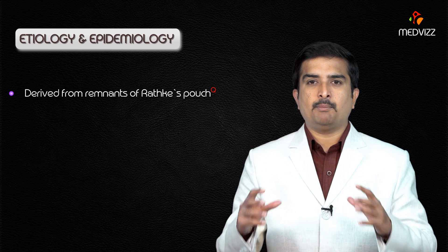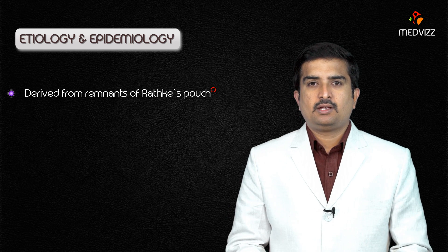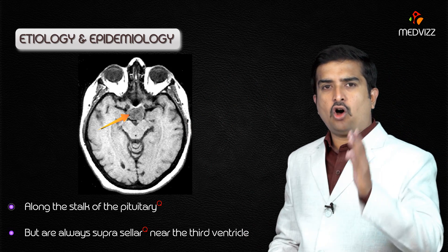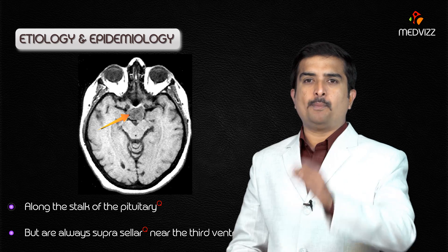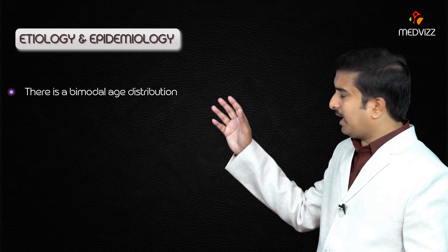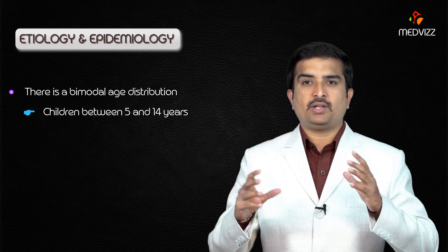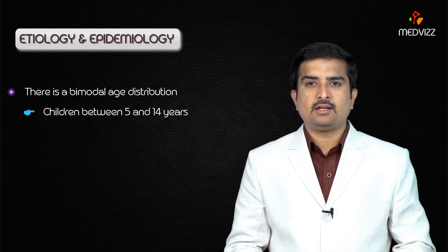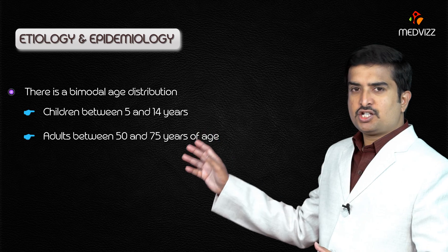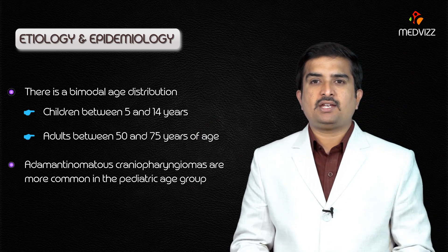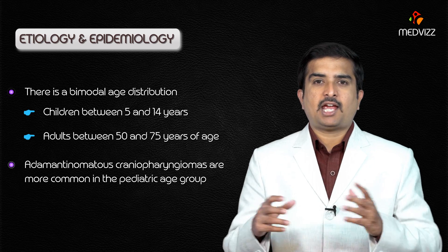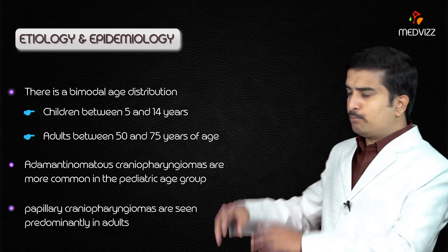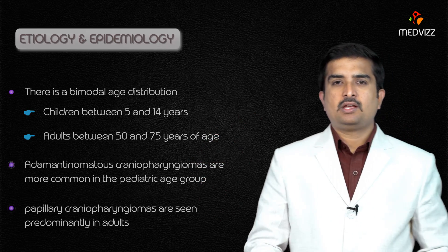Craniopharyngioma is derived from the remnants of Rathke's pouch, which is the embryologic precursor of the anterior pituitary. They may also arise within the sella turcica or along the pituitary stalk, but are always suprasellar — that is, near the third ventricle. There is a bimodal age distribution: one peak in children between 5 and 14 years, and a second peak in adults between 50 and 75 years. Adamantinomatous craniopharyngiomas are more common in the pediatric age group, while papillary craniopharyngiomas are predominantly seen in adults.